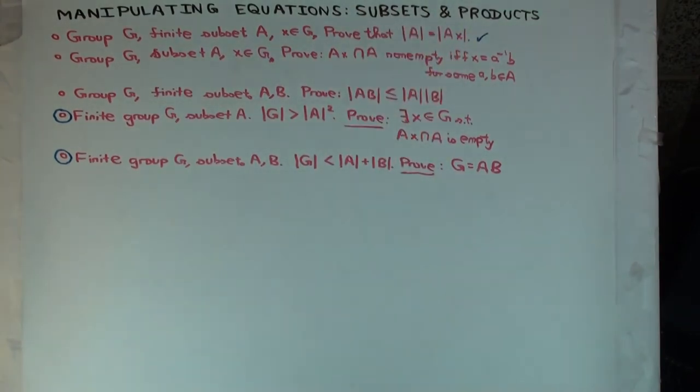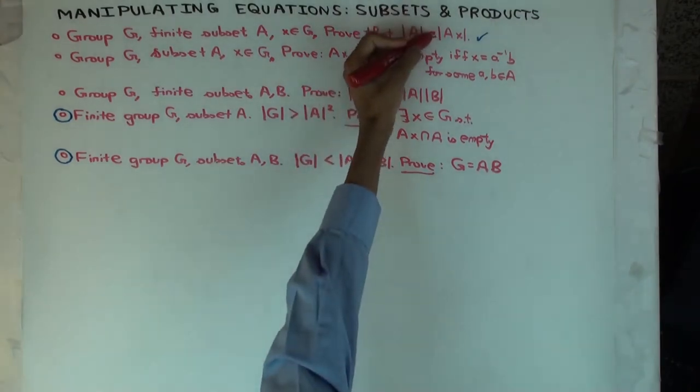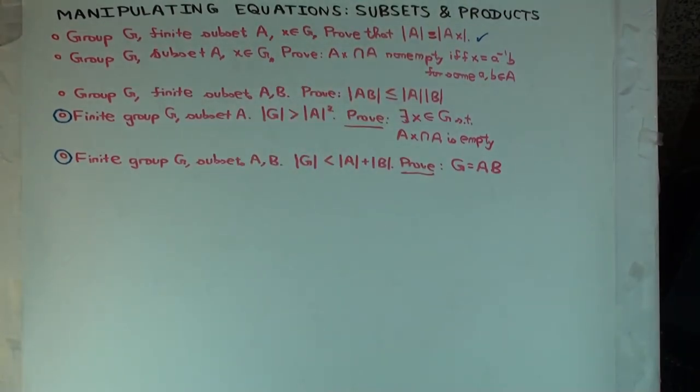Now the next one. You read the next one. For group G subset A, and X is an element of G, AX intersects A is not empty if and only if X equals to A inverse B. Can you prove this? Let's go from this direction to this direction. So suppose AX intersect A is non-empty. What does that mean?